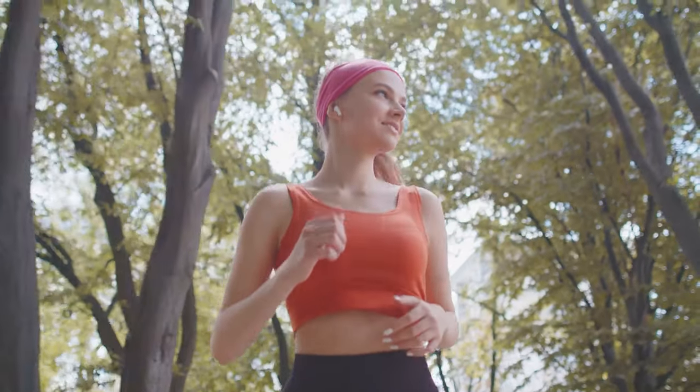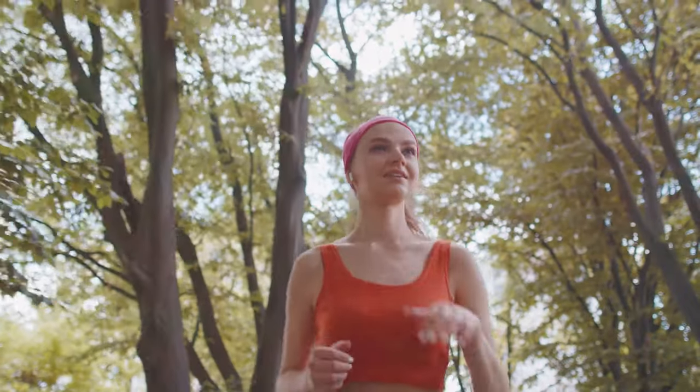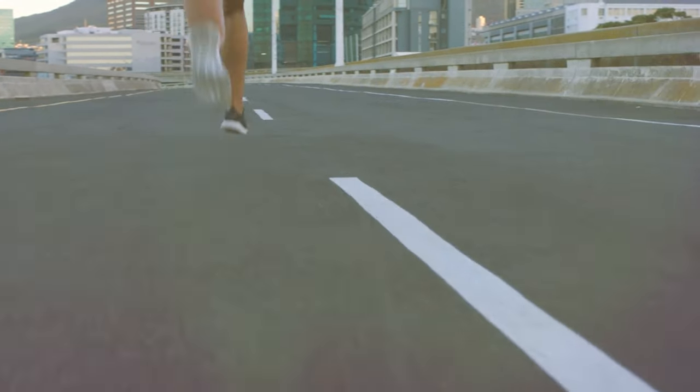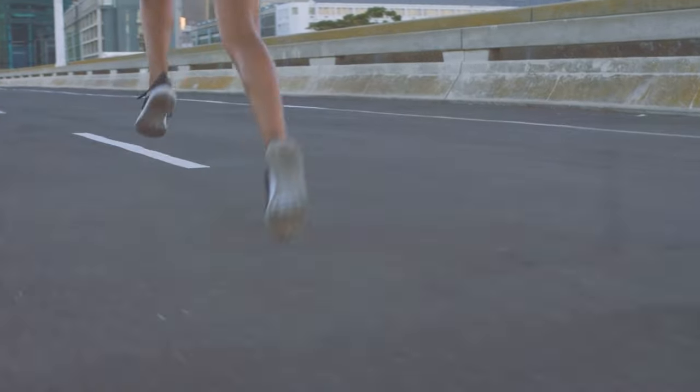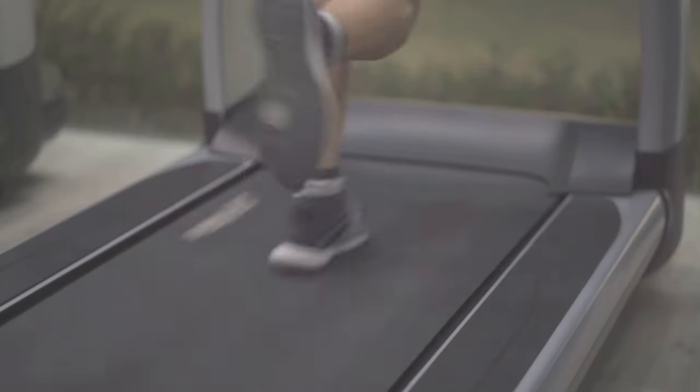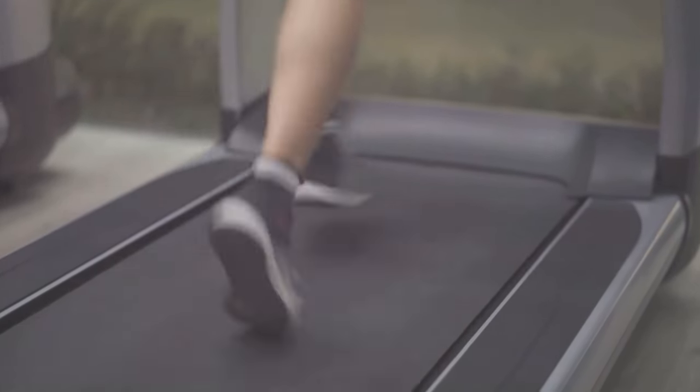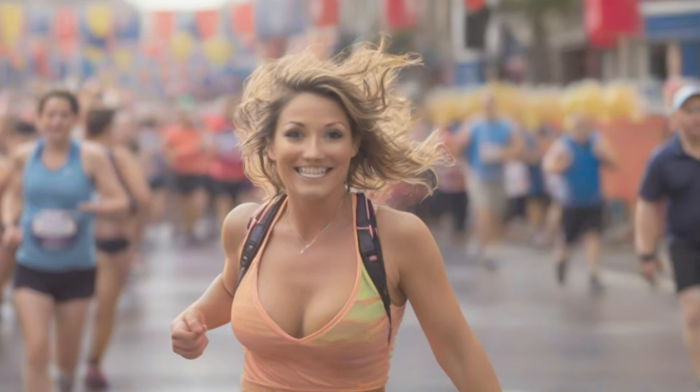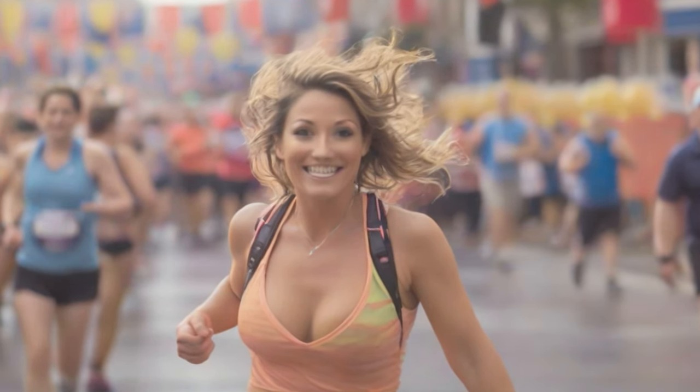Our physiological traits, developed over time, enable us to endure the demands of long-distance running. One such adaptation is our efficient cooling system. Unlike other animals that rely on panting to cool down, humans can sweat, allowing us to regulate body temperature and continue running in the heat. Our long legs, coupled with short toes, provide us with great leverage and balance, enabling us to maintain a steady and efficient stride over extended distances.